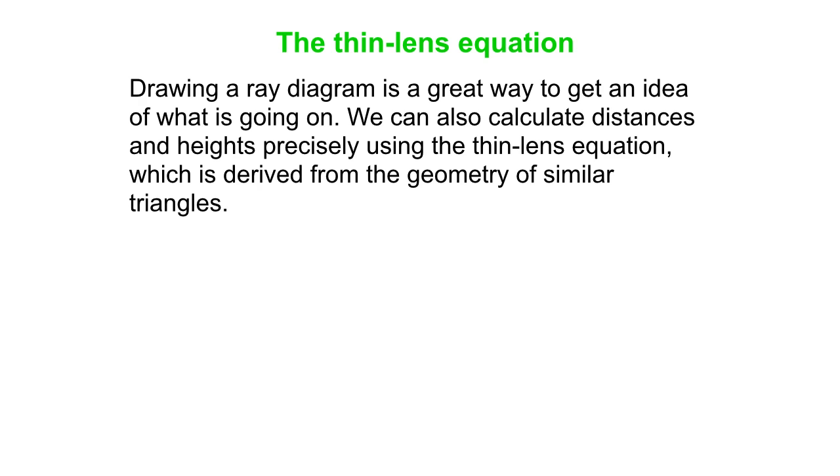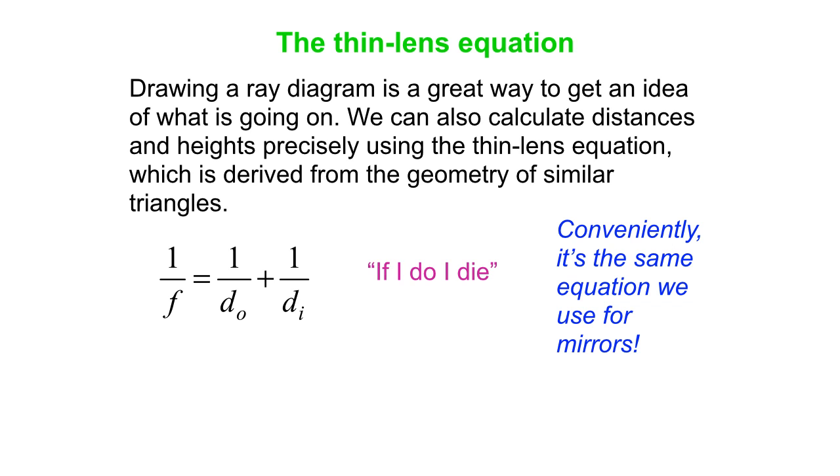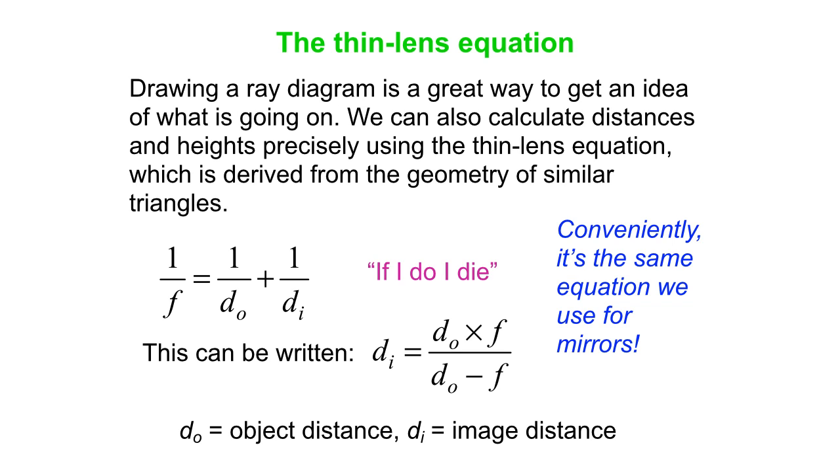So here is our thin lens equation. Drawing a ray diagram is a good way to get an idea of what's going on, but you can calculate things with the thin lens equation. That can be derived from the geometry of similar triangles. Here's a nice mnemonic to remember it: if I do, I die. Very conveniently, it's the same equation we use for mirrors. You can also rewrite it as di equals do times f over do minus f. Do being the object distance, di is the image distance, and f being the focal length.